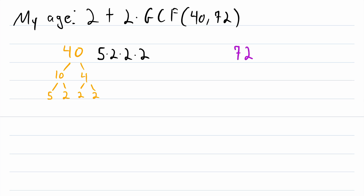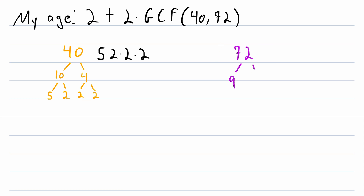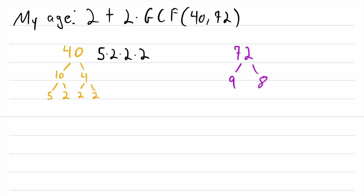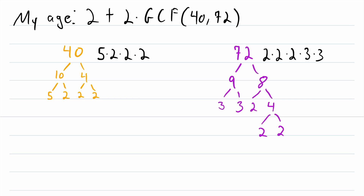Moving on, we need the prime factorization of 72. You might recognize 72 as the eighth multiple of 9, so 9 times 8 is 72. Knowing your multiplication facts makes these factor trees a lot easier. 9 factors into 3 times 3, both prime. Then 8 factors into 2 times 4, and 4 factors into 2 times 2. So the prime factorization of 72 is 2 times 2 times 2 times 3 times 3 — three 2s and two 3s.